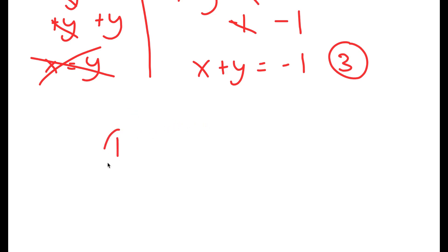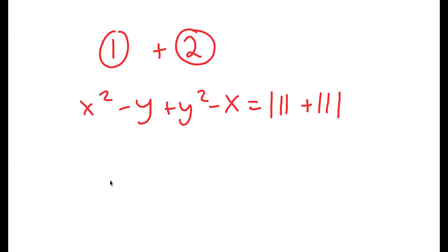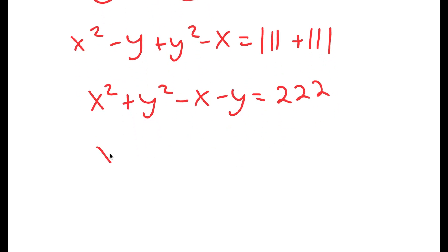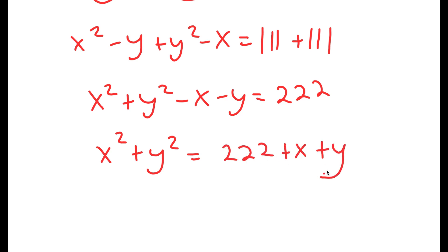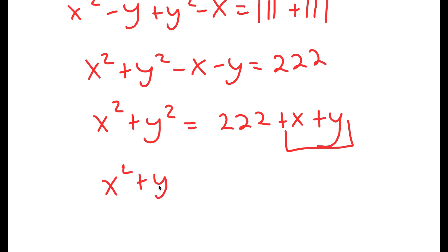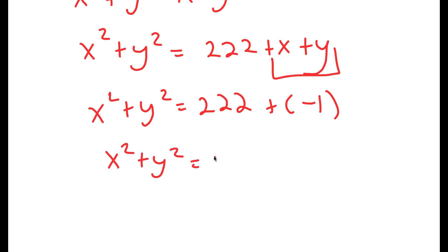Now I'm going to add equation 1 and equation 2. So x squared minus y plus y squared minus x equals 111 plus 111, which turns into x squared plus y squared minus x minus y equals 222. Reordering, x squared plus y squared equals 222 plus (x plus y). Since x plus y is negative 1, x squared plus y squared equals 221. This is equation 4.